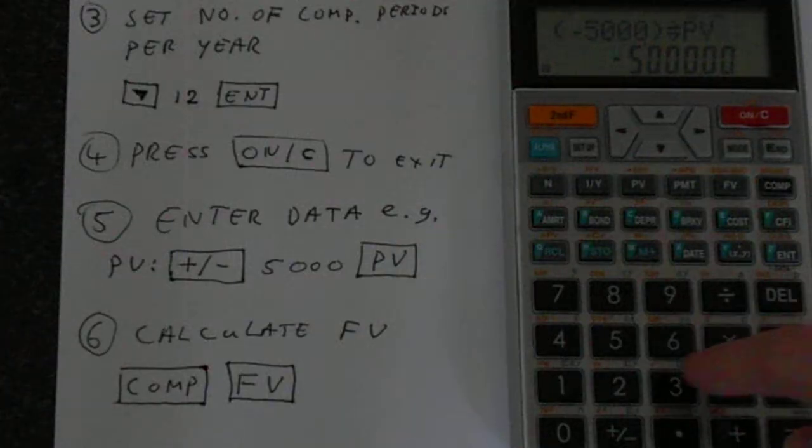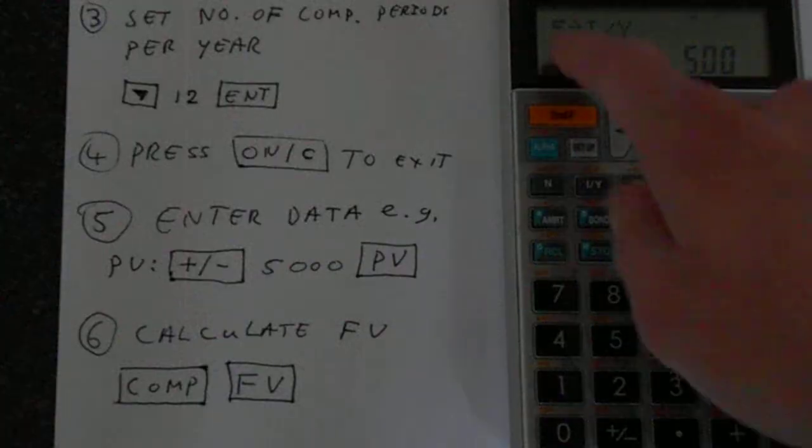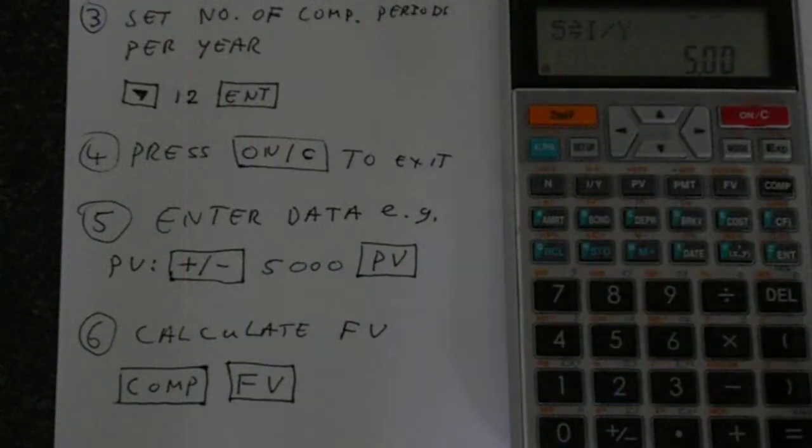Interest rate, we've decided it's 5% a year. So do 5 and then I/Y. You see this symbol means it's putting into that memory.